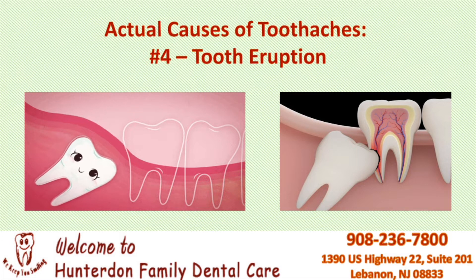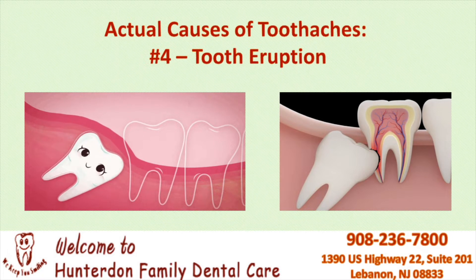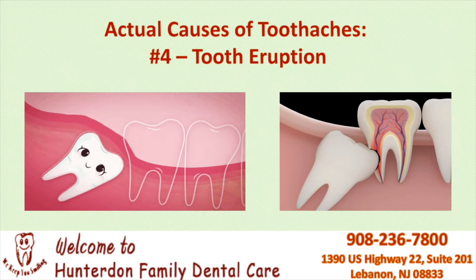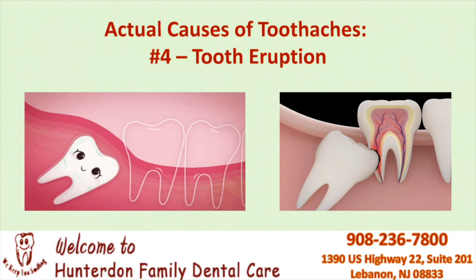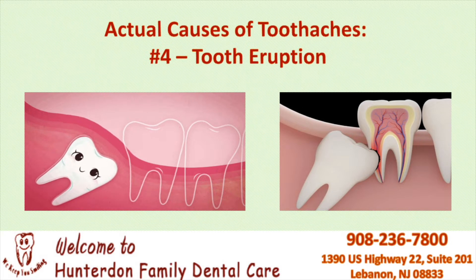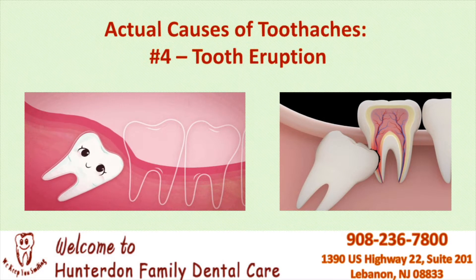Something which we all experienced pain from as children was tooth eruption, which is when the teeth start to grow out of our gums. And in adults, this happens again with wisdom teeth. However, wisdom teeth can be impacted, which means that they don't have a path to erupt, and they can traumatize the gums and the adjacent teeth on their way out, sometimes destroying adjacent teeth with time. Only a dentist would be able to tell on an x-ray and diagnose this issue.